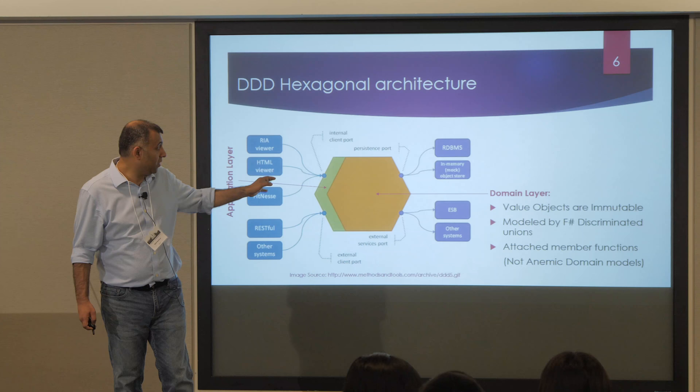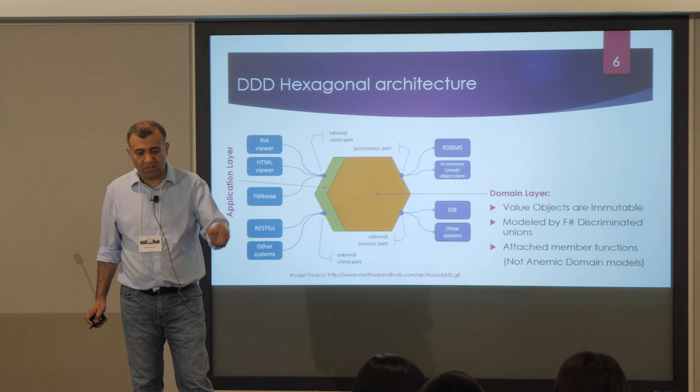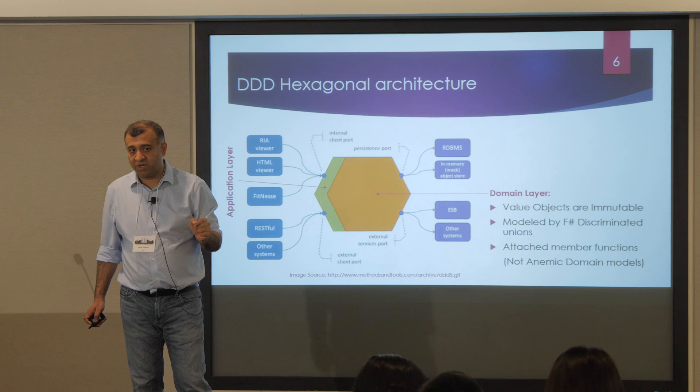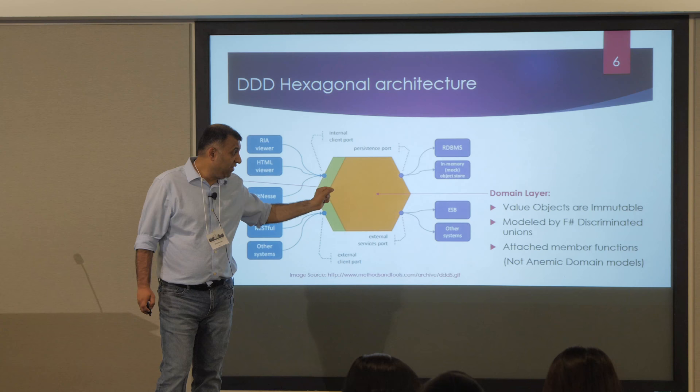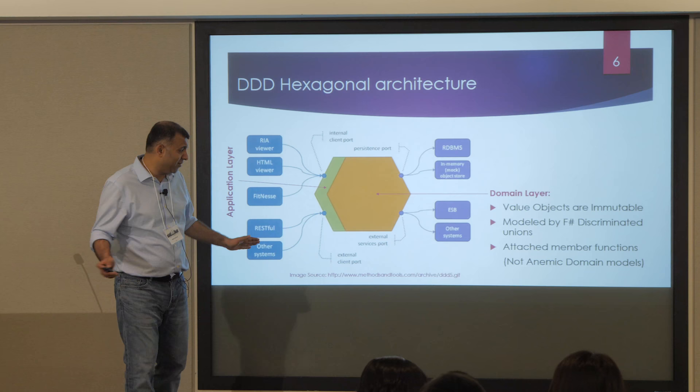There's a pattern in DDD called the anemic domain model that should be avoided — where value objects are just getters and setters with no real functionality. In F# you can attach member functions to immutable objects, preventing anemic domain models. This may not be available in OCaml or Haskell, though I'm not an expert in those.